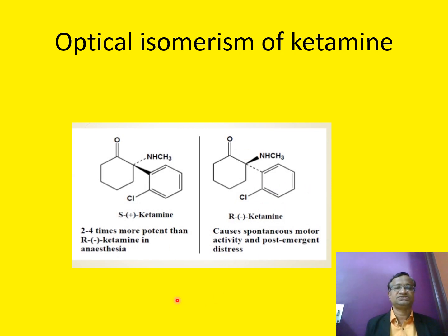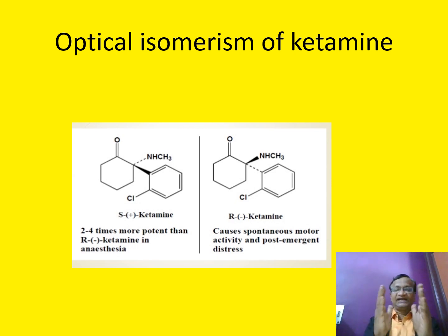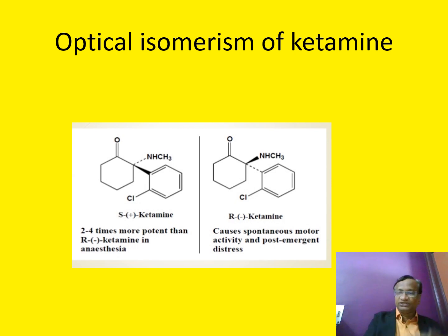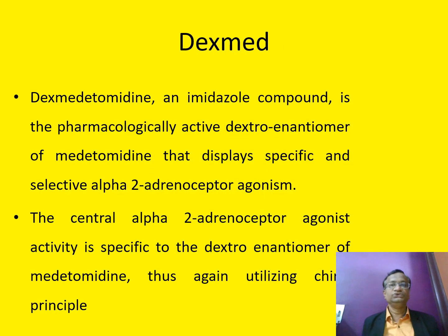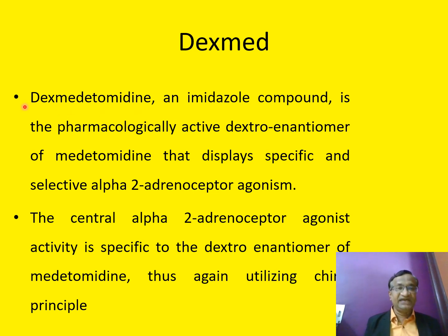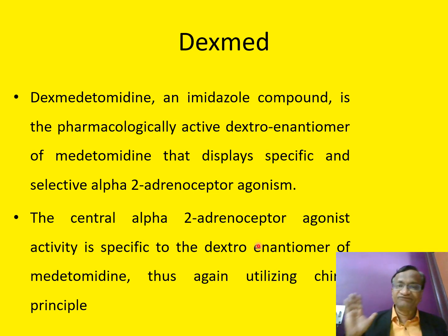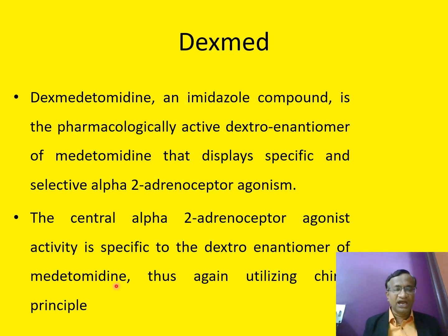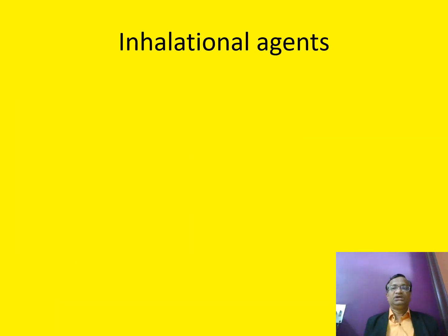R and S ketamine: R is rectus (right) and S is sinister (left) — meaning the arrangement of molecules is anticlockwise in S and clockwise in R. Dexmedetomidine is widely used, but medetomidine is the original molecule. The dextroisomer of medetomidine is more potent and has better alpha-2 adrenergic agonist activity.